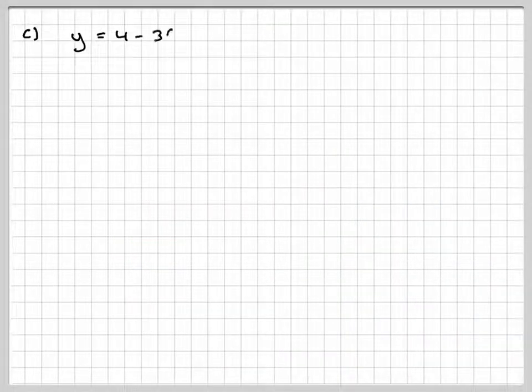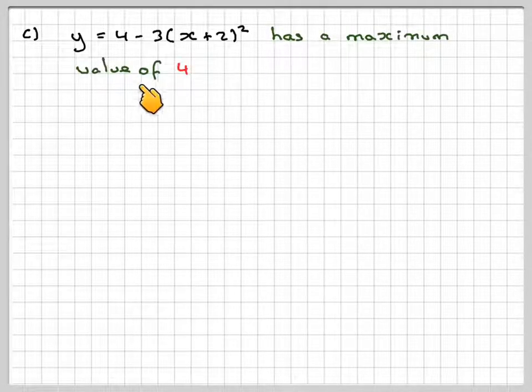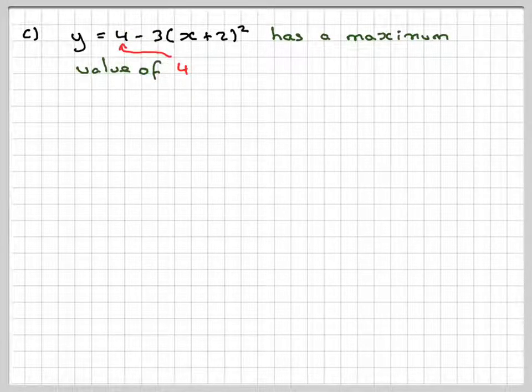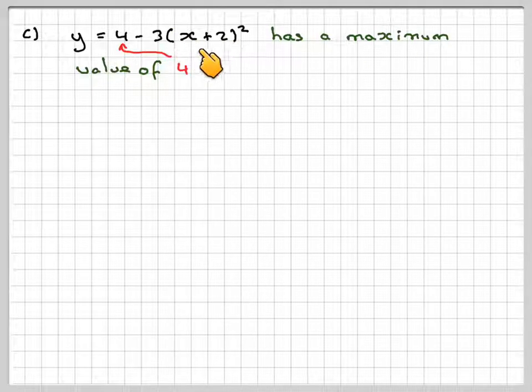Right, so we've got y = 4 - 3(x + 2)². Now this will have a maximum value of 4, which is this number here, because this bit here will always be positive.